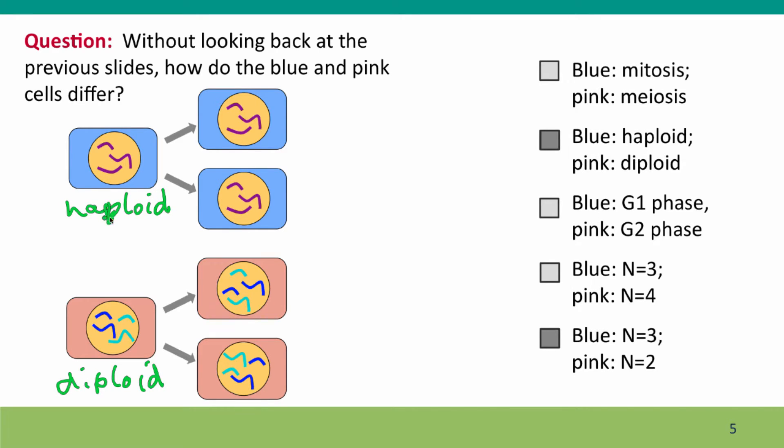The other way they differ is by the number of chromosomes in a set. The blue haploid cells have three different chromosomes. So we say N equals three. The diploid cells, although they have four chromosomes, they're two sets of homologous chromosomes. So here N equals two. You could say two N equals four if you'd like to do the arithmetic.